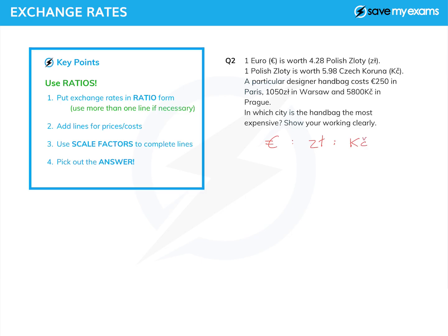One of our exchange rates is 1 to 4.28 for euros to zloty. I don't know what that is in koruna yet — I don't need to work it out. The other exchange rate is 1 to 5.98, and that's zloty to koruna. What we could do is convert them all to euros, all to zloty, or all to koruna, or we could just look at the price in Paris and compare it to the others. That's the way I'm going to do it.